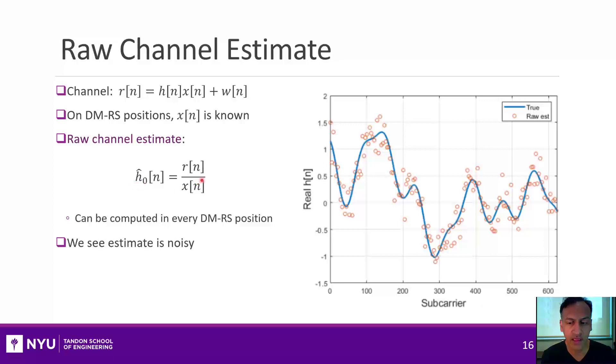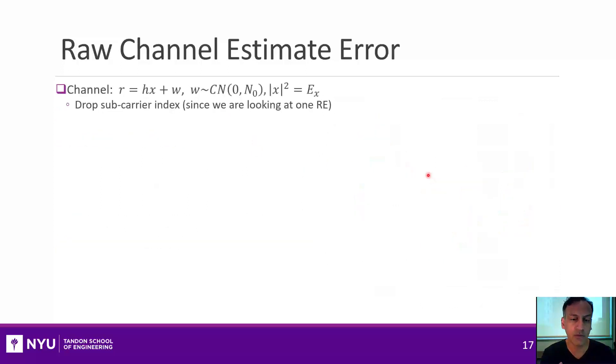All right. So if you look at this estimate, that is what these little red squares are. You see, it basically does track the real channel. But of course, there's noise in there because of this noise. So it's pretty noisy. But you already have some estimate right now.